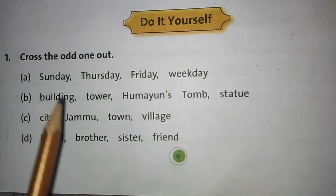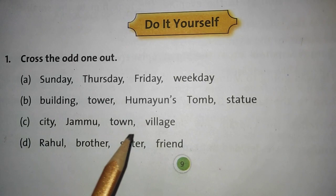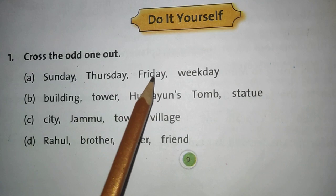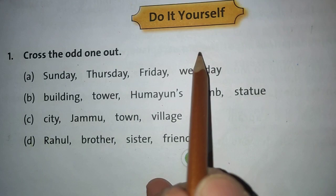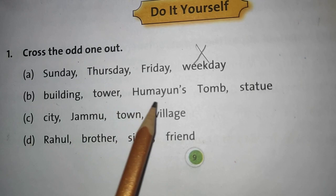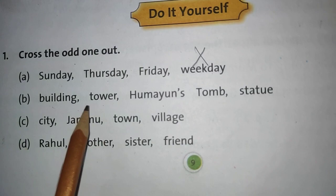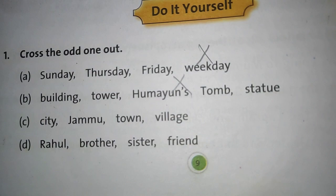Now on page number 9 — cross the odd one out. You have to find what is different and cross it. The first one is: Sunday, Thursday, Friday, weekday. These are days of the week — but weekday is not a day name, so cross it. The second one: building, tower, Humayun, storm, statue. Tower, building, and statue are the same type, but Humayun and storm are different — cross them.